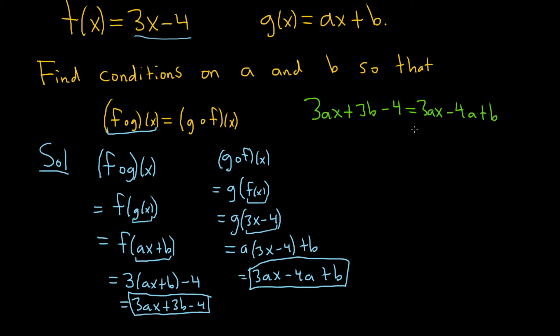So we have 3ax plus 3b minus 4 equals 3ax minus 4a plus b. I did that kind of quick, so let me just explain it. So I took this piece here, 3ax plus 3b minus 4. So that's f o g of x. And then we took this one here, 3ax minus 4a plus b. And that's g of f of x.